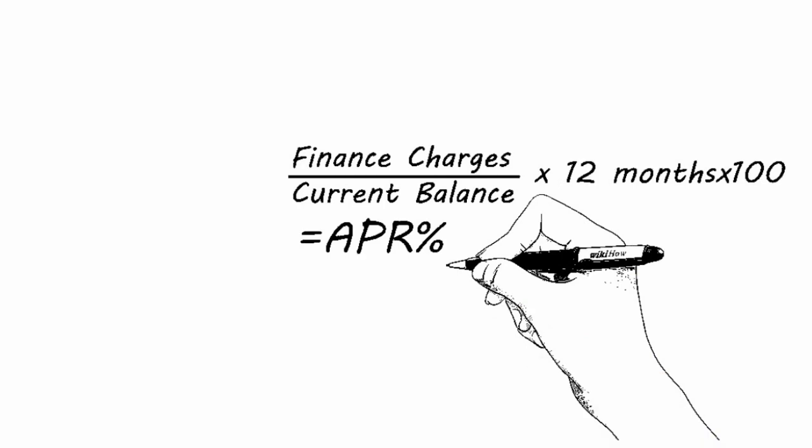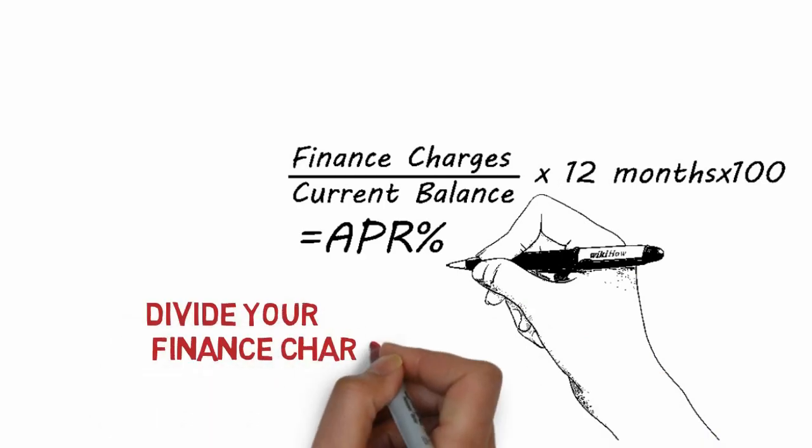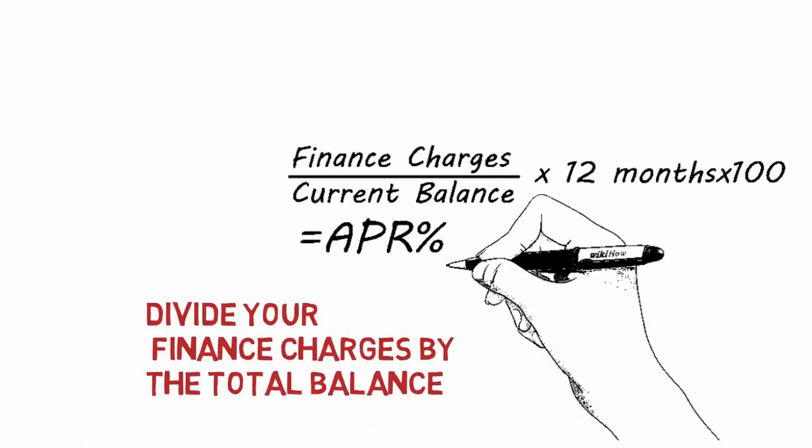Part 2: Calculating APR for credit cards. Divide your finance charges by the total balance, then multiply by 1200 to get your APR. APR, or annual percentage rate, is the amount of money your bank charges you when it lends you money. Unless your APR is 0%, you're actually paying extra money every time you leave a balance on your credit card. You should end up with a decimal before multiplying by 100 — this final step converts the decimal into a percentage, making it easier to read.